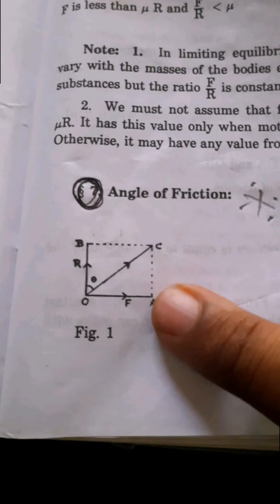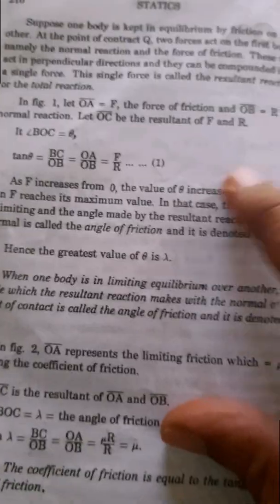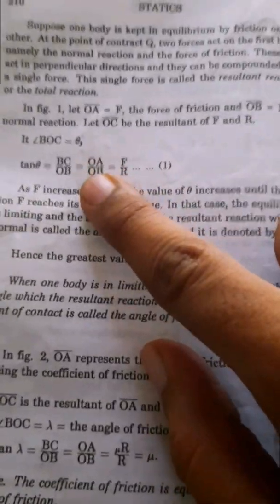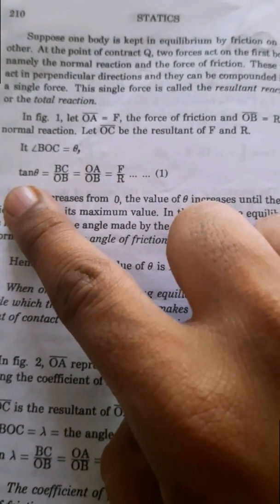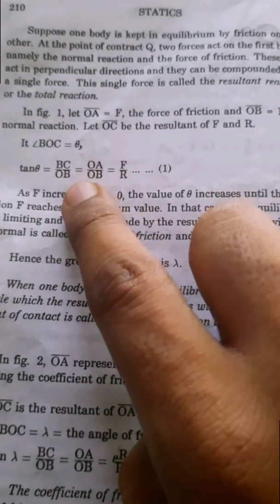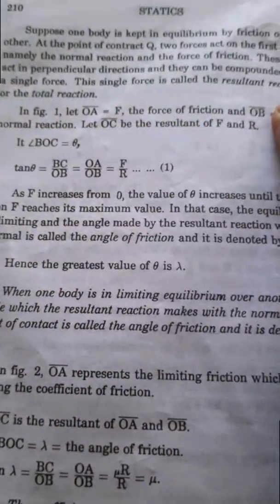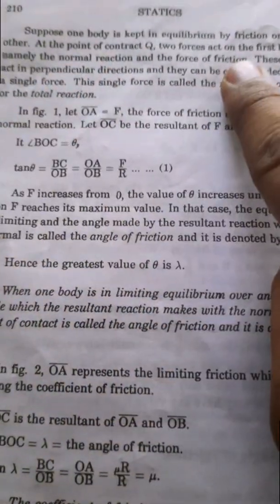This is the diagram. OA is F and OB is R. OC is the resultant. Considering the triangle OBC, you can use tan theta — the opposite side by adjacent side formula. You can use BC by OB, and replace BC by OA, giving OA by OB.